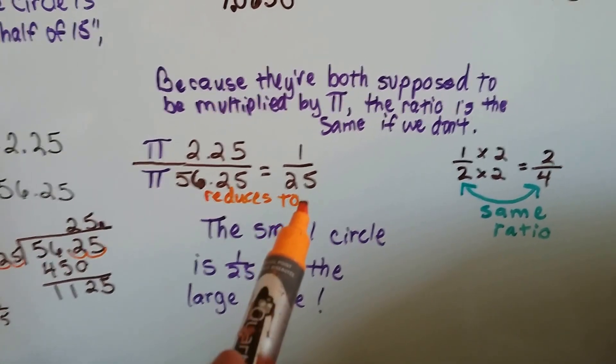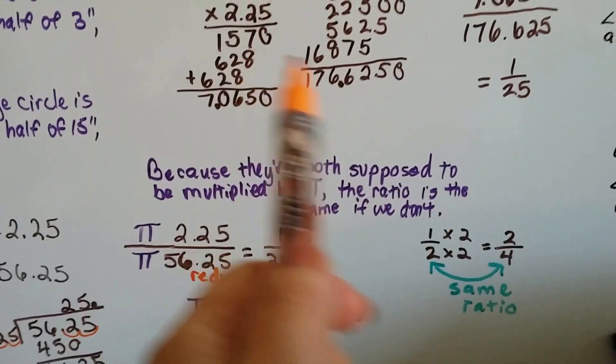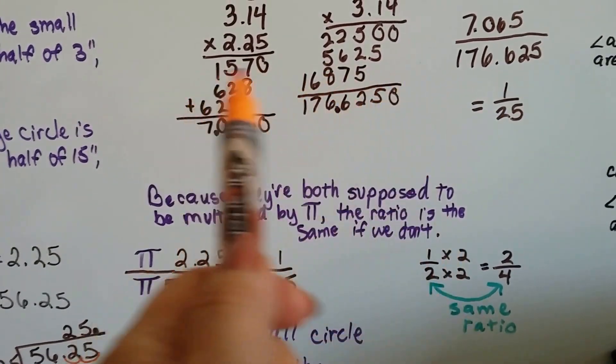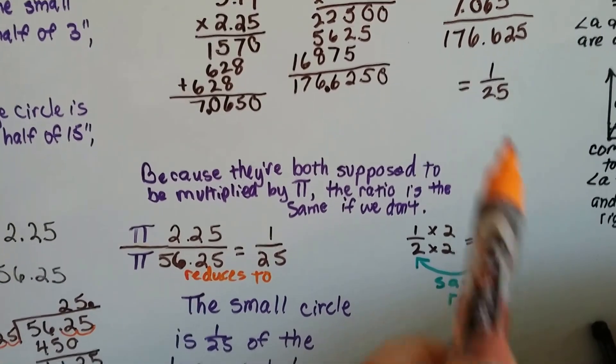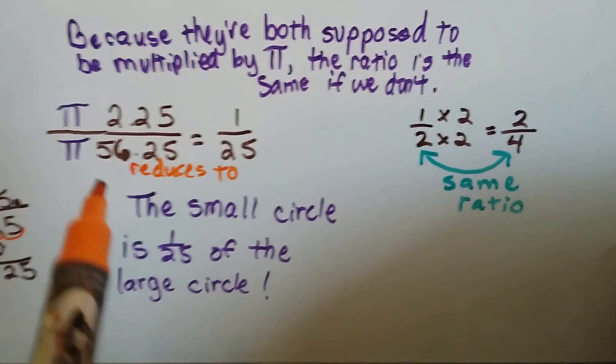We can just say pi times 2.25 over pi times 56.25. It's going to reduce to 1 to 25. See? Even if I did multiply them by pi, the ratio would still be 1 to 25. Now why is that?